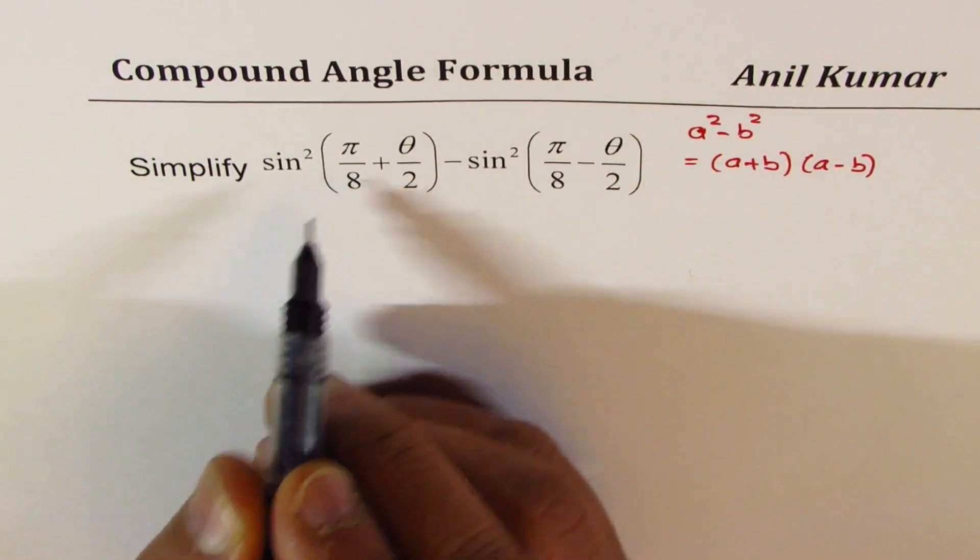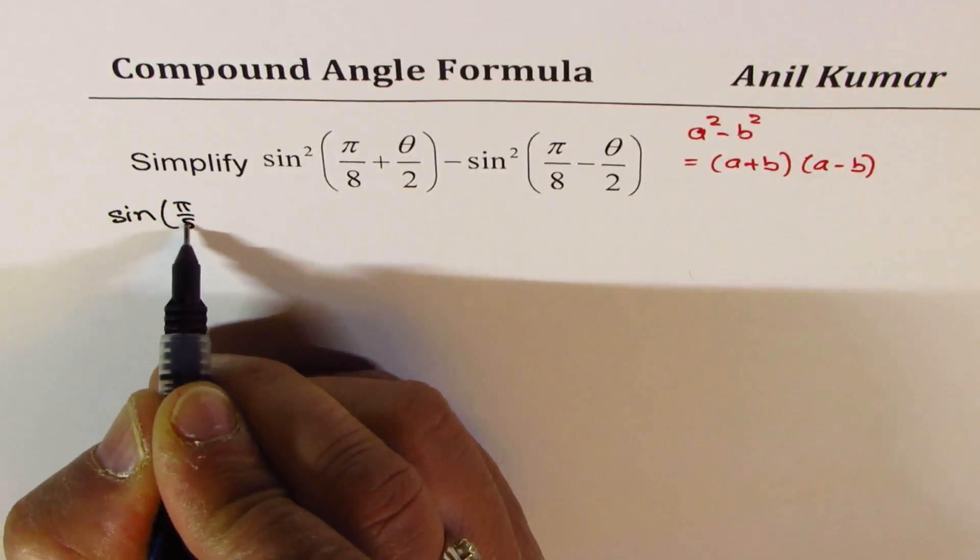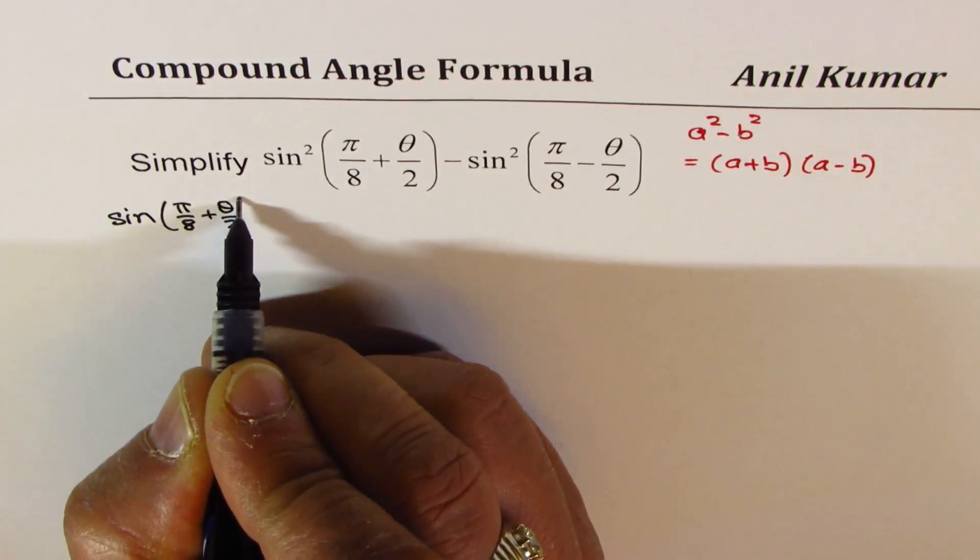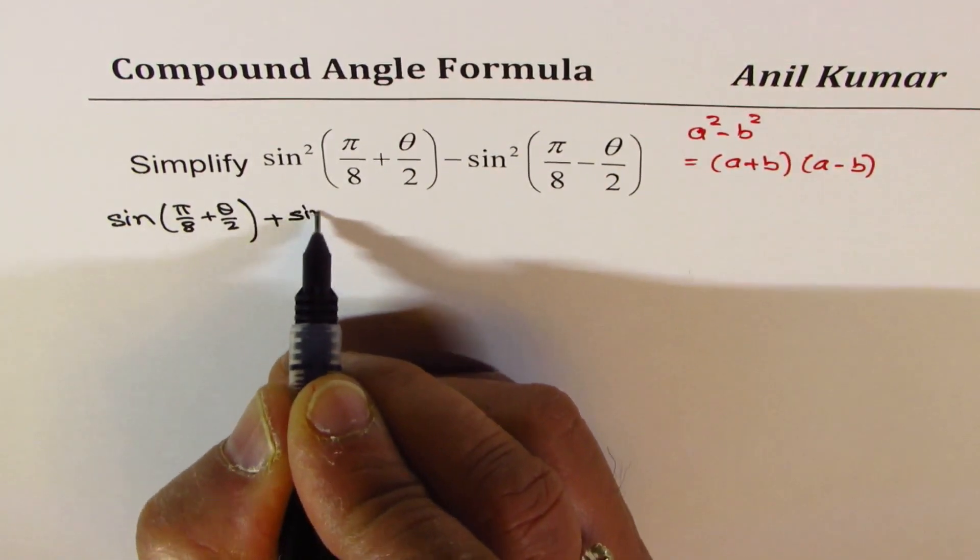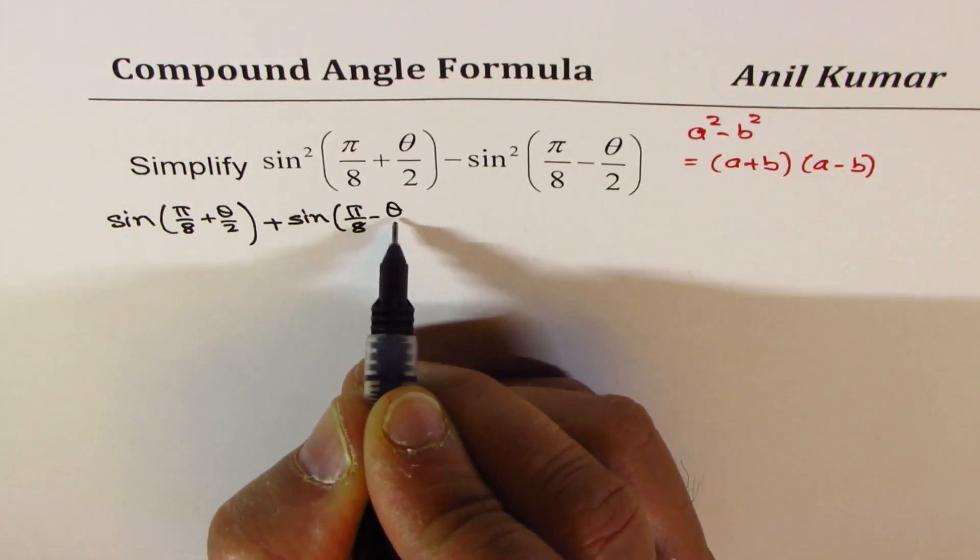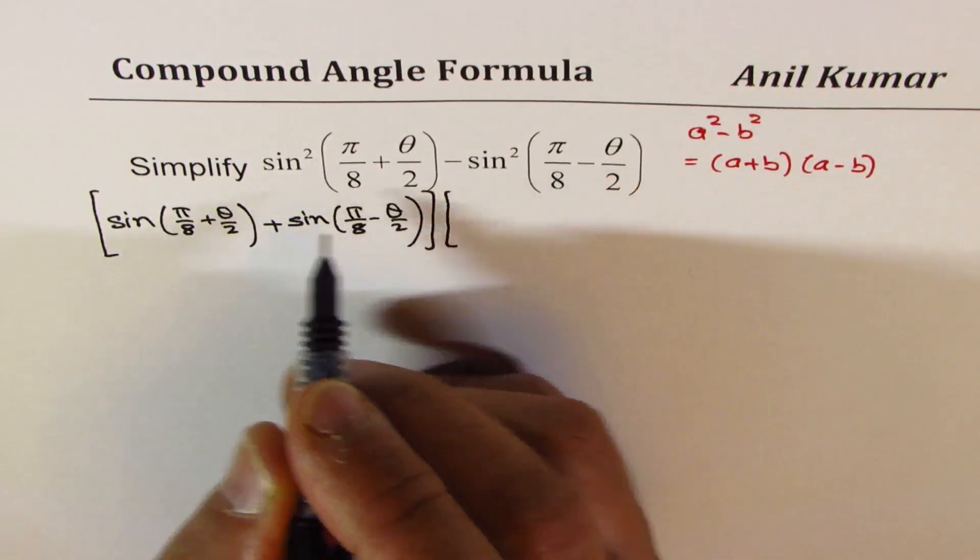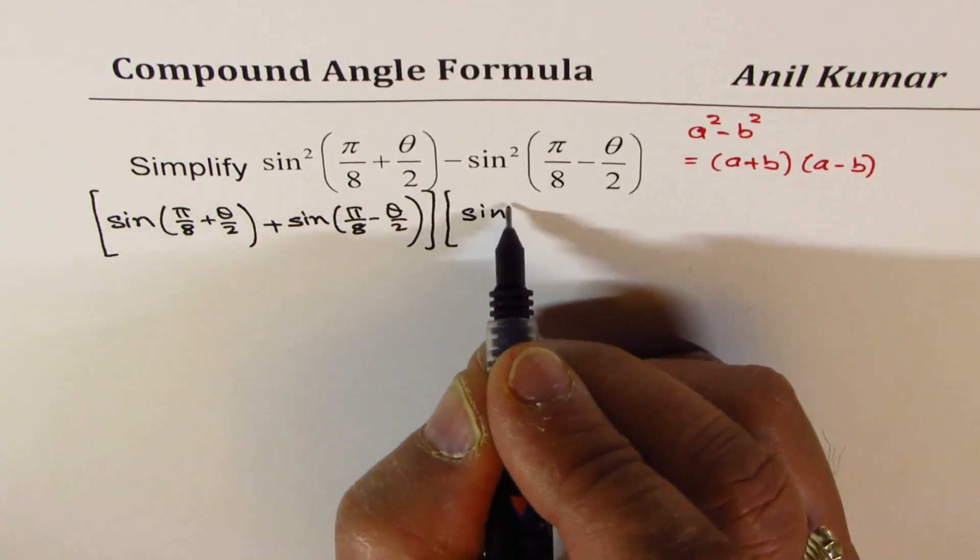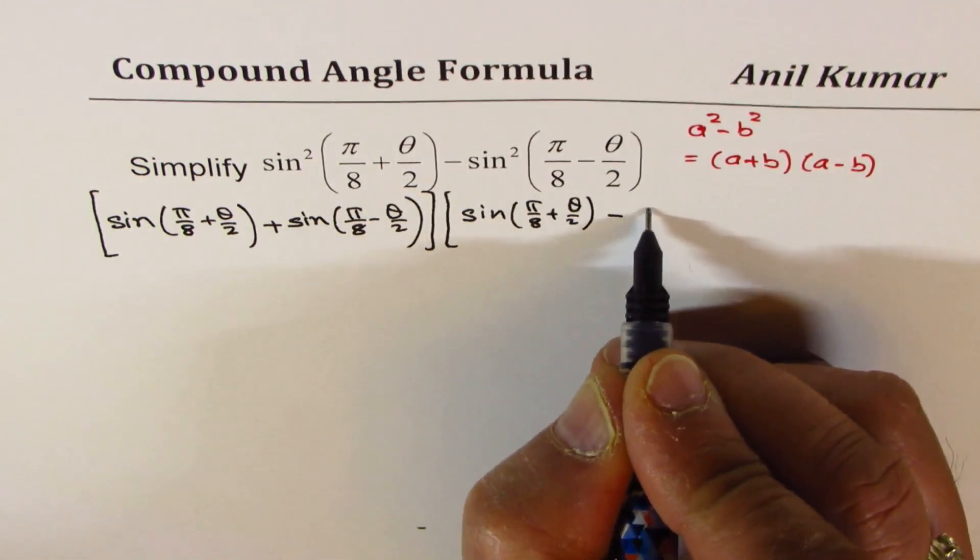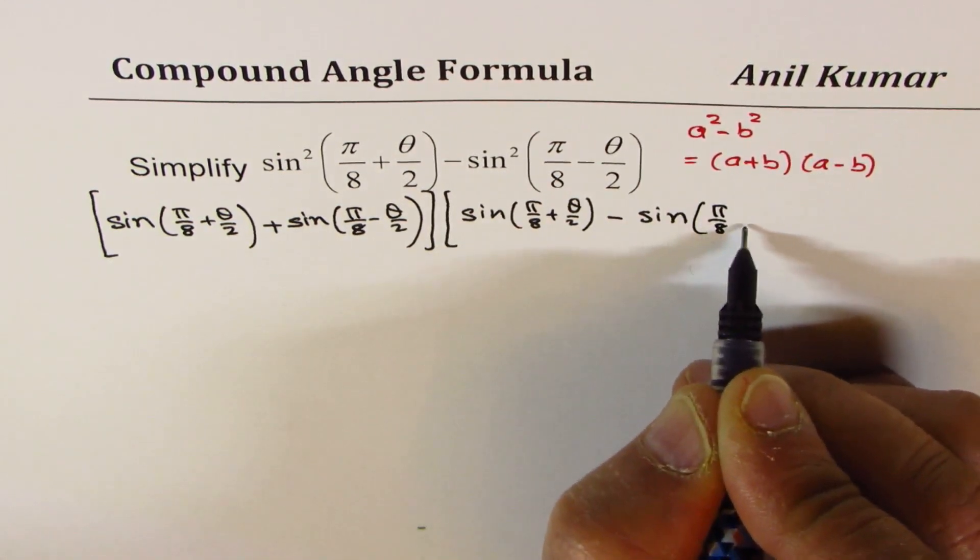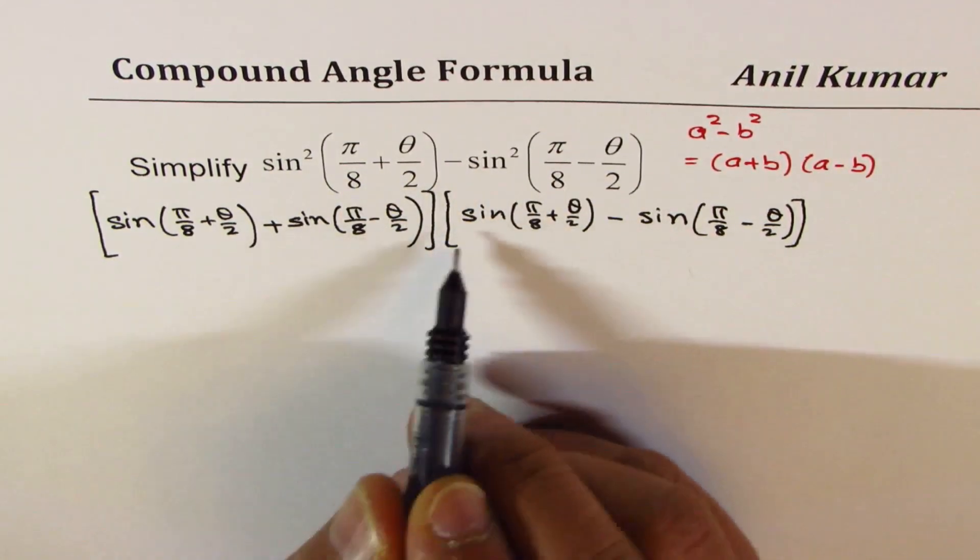So in this particular case, I could write this as sin(π/8 + θ/2), this is like a² - b², so we'll add them up plus sin(π/8 - θ/2), times sin(π/8 - θ/2). So we have written this as difference of squares as product of sum and difference.